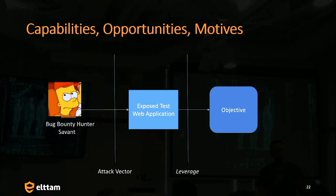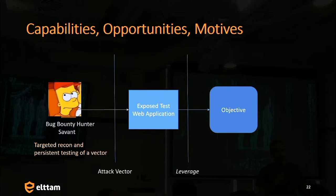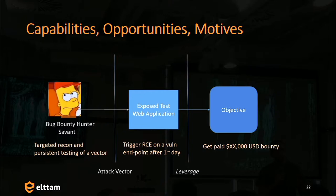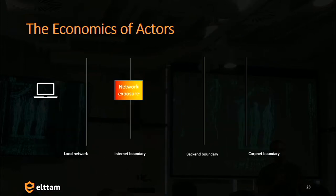If we go to a bug bounty scenario: what exposures do we actually present? A bug bounty hunter might have targeted reconnaissance and persistent testing of a vector. Maybe there's some test infrastructure on the internet — via reconnaissance they found a test server running some outdated Spring or Tomcat. They'll try to breach that, get code execution, get a shell on that server. The motive is to get paid a bounty. They might spend a day, maybe two days, and then get $20,000 USD. And this is where we talk about economics — there are economics behind attackers.